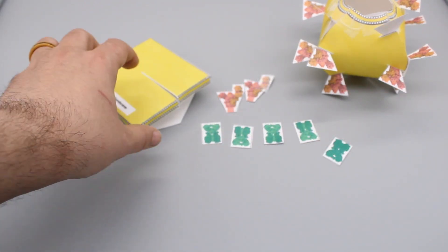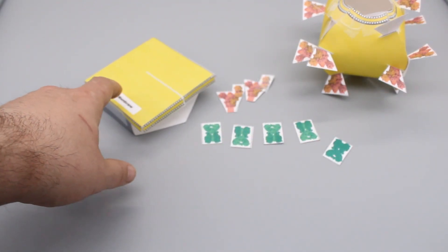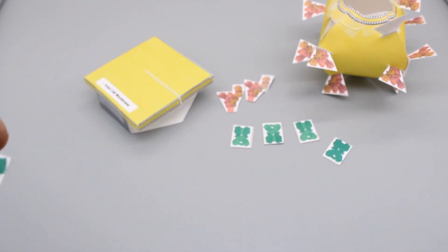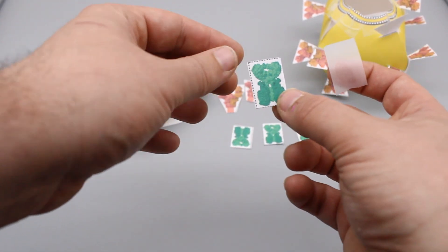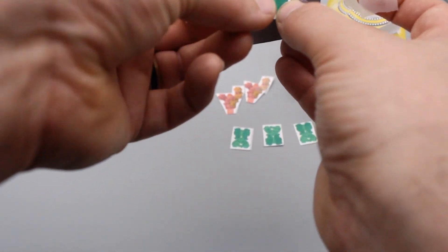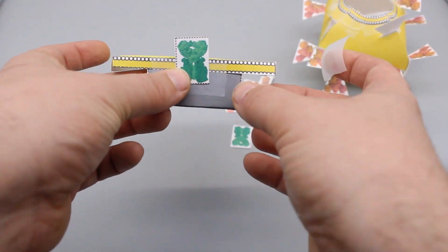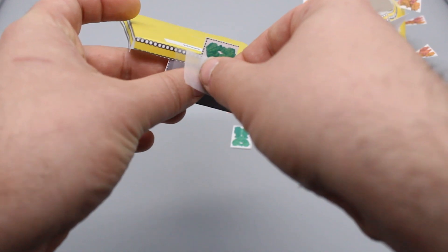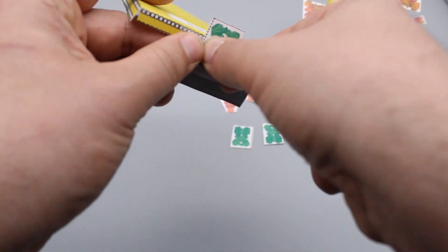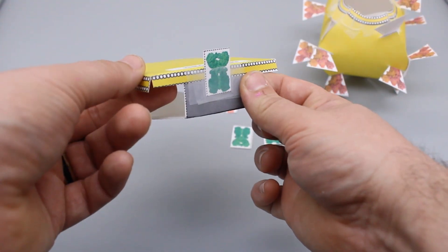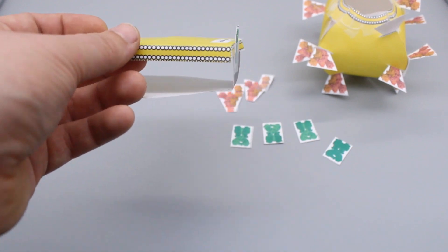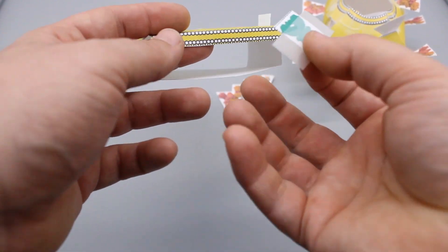We're next going to add our ACE2 proteins to this membrane. The ACE2 protein is essentially a protein that sits embedded in the host cell membrane. All you have to do is line it up and add a piece of tape to hold it on. We're going to do four of these, one for each side of our host cell membrane.